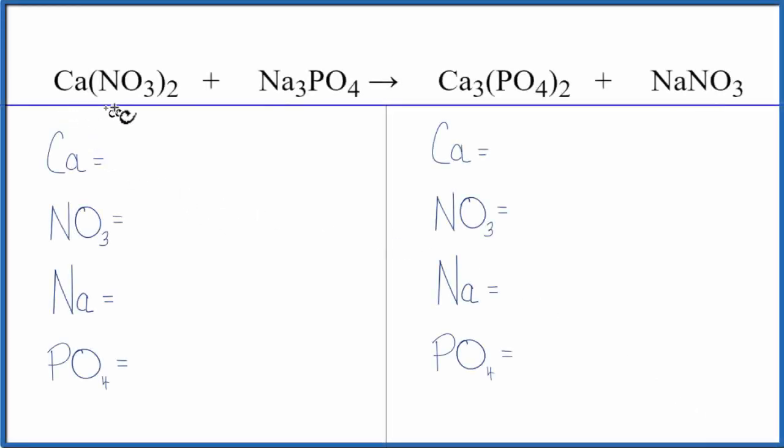In this video, we'll balance the equation calcium nitrate plus sodium phosphate. So this is a double displacement reaction. The calcium and the sodium, they're going to switch places.